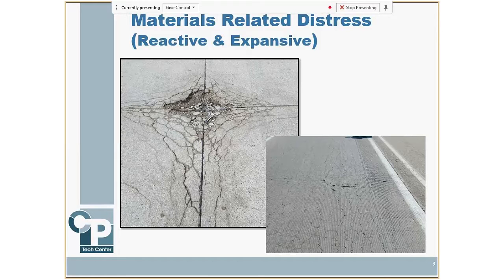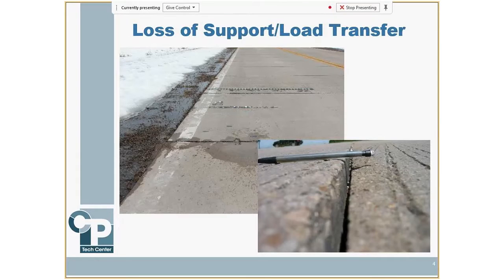What are some of the joint deterioration types that you see out there? Obviously there are some materials-related stresses — D-cracking, which is in that left-hand picture, ASR, ACR, and some of those expansive stresses that often occur at the joint, because that's where you have the least amount of compression. So it's going to expand where it can.